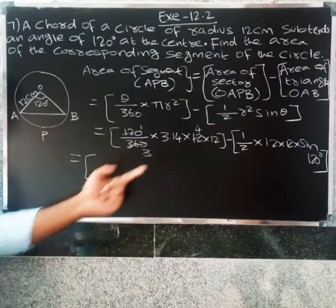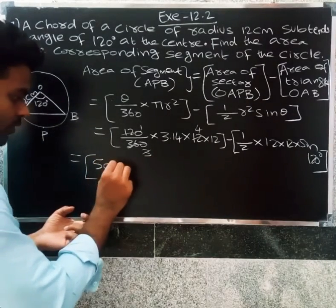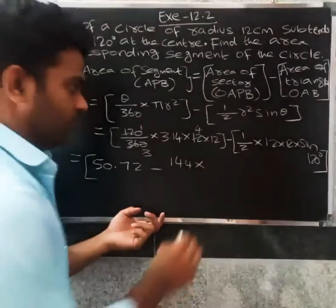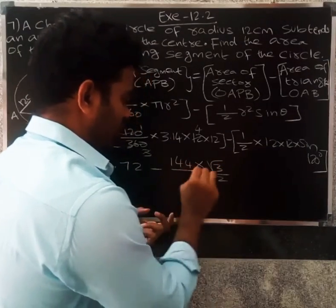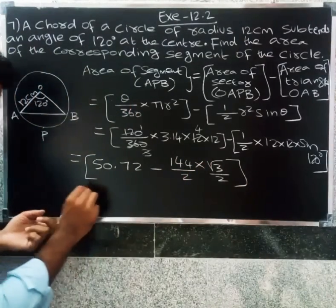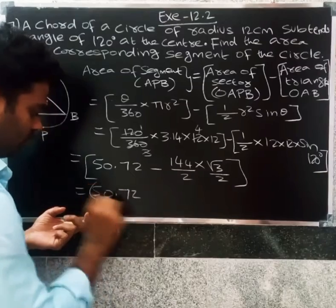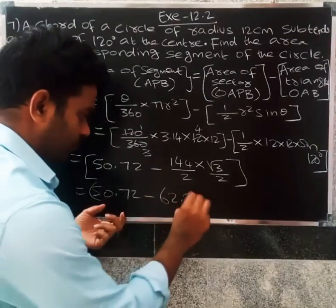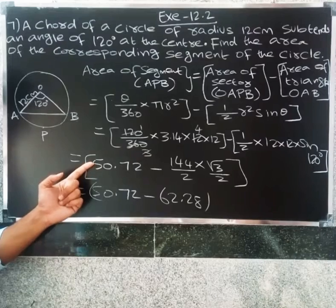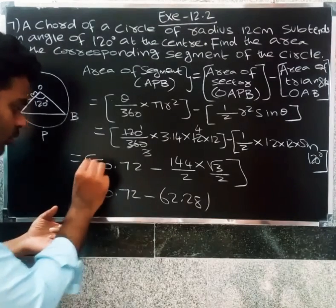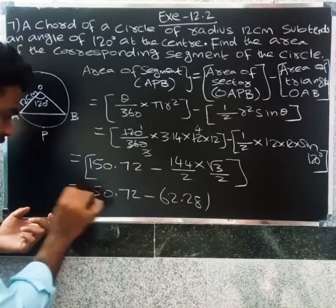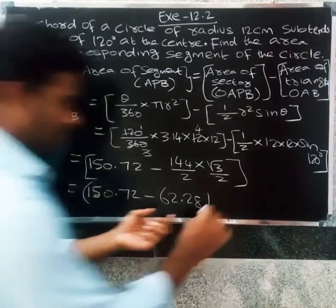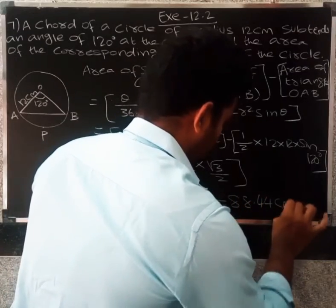This gives 50.72 for the sector area. For sin(120°), the value is √3/2, so the triangle area is 144 × √3/4 = 62.28. Therefore, area of segment = 150.72 − 62.28 = 88.44 centimeter square.